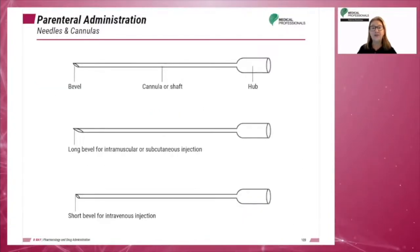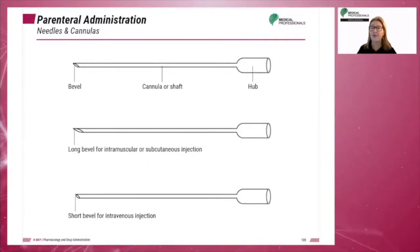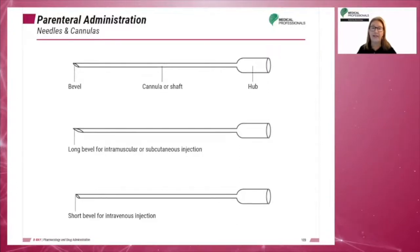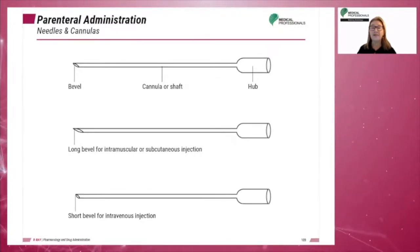Needles have four parts. The hub is the part which attaches to the syringe. The cannula or shaft is the length of the metal part of the needle. The bevel is the slanted part of the tip of the needle, and the lumen is the size of the opening.